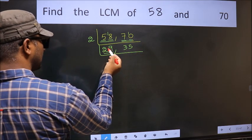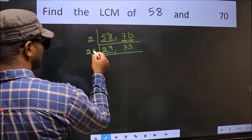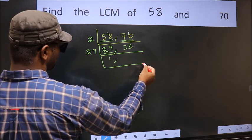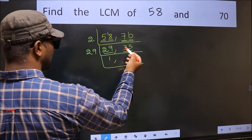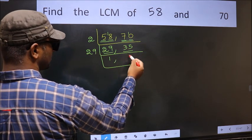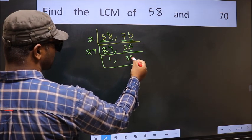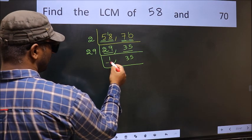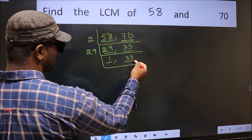Now here we have 29. 29 is a prime number, so 29 once is 29. The other number, 35, is not divisible by 29, so we write it down as it is. Now we got 1 here, so focus on the other number, 35.